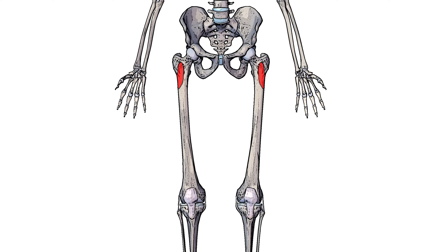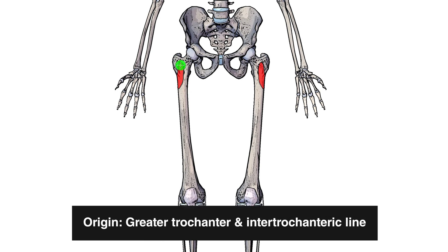The vastus lateralis origin is going to begin on the anterior femur and then work its way round to the posterior femur. As you can see highlighted here in red on either side, the anterior portion of this origin begins on the greater trochanter and the intratrochanteric line.